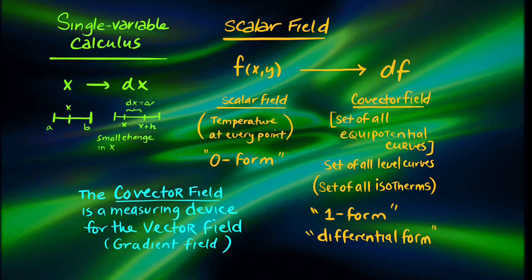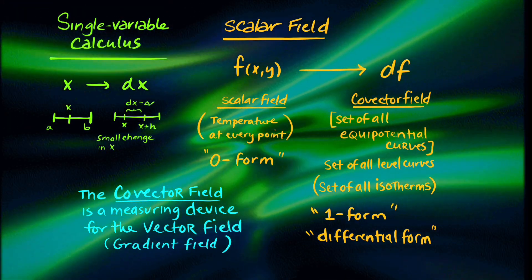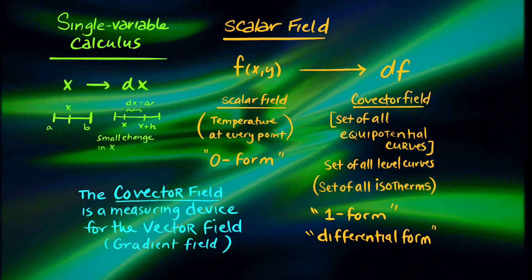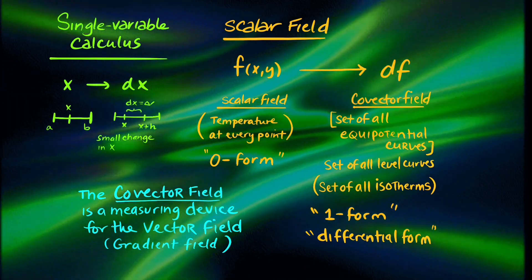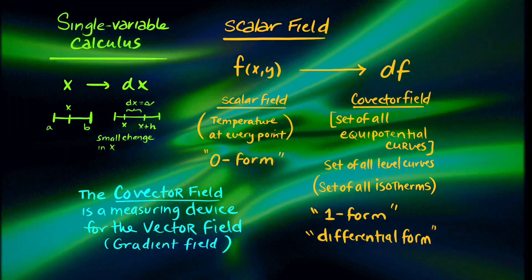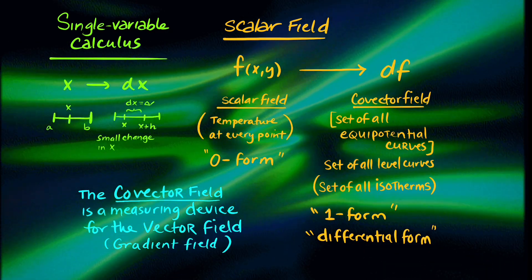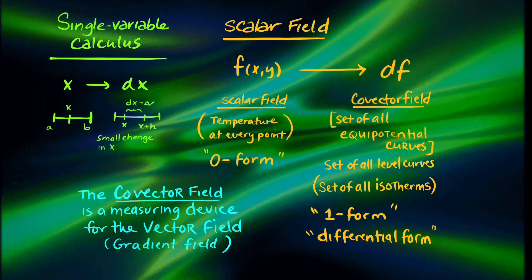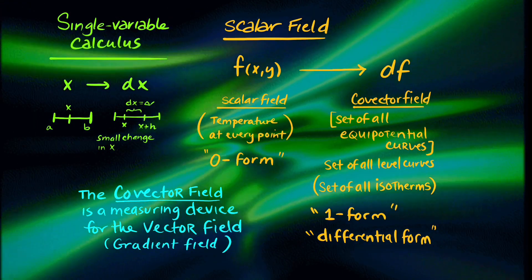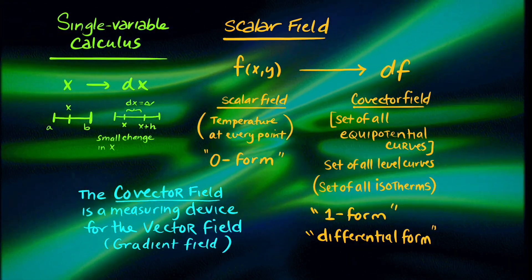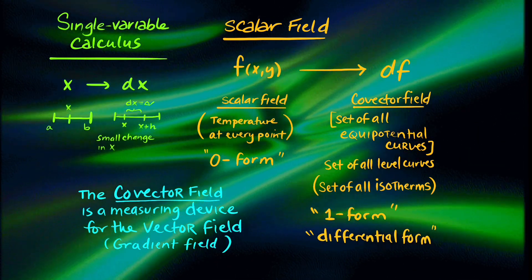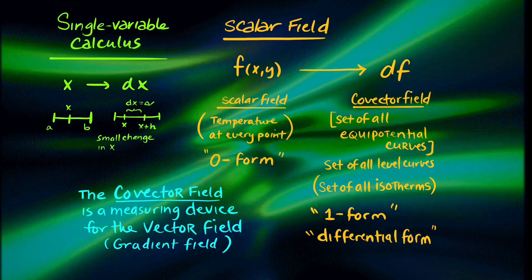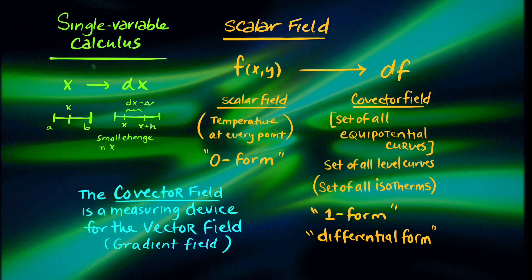In single variable calculus, a small change in x is given proportionally as dx. But for a scalar field like temperature, which we consider a zero form, the differential df applying this differential operator lowercase d produces a covector field, a one form, a differential form. And this differential form is part of the integration process. It allows us to find increments along a parameterized curve.